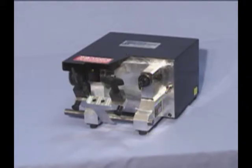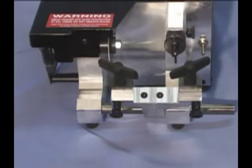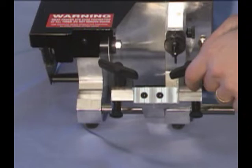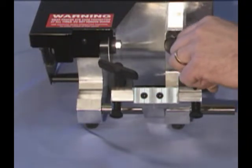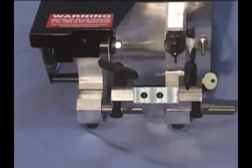Let's cut a key on the DBM-1 to show its simplicity. First, insert a pattern key to the right side vice. Since all keys are gauged from the tip, we'll make sure the tip of the key is past the left side of the vice.